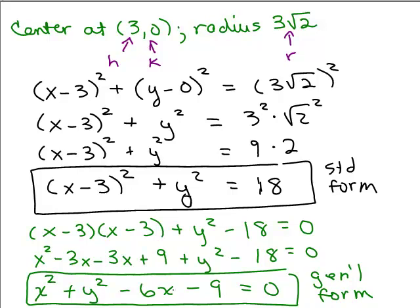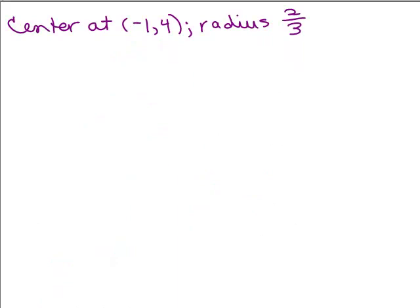By the way, when you do the general form, we usually also want to have all integers, in other words, no fractions. Here's our second problem. We have a center at negative 1, 4 and a radius of 2 thirds. Again, that's our H, that's our K and that's our radius.